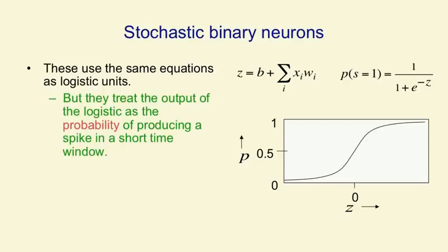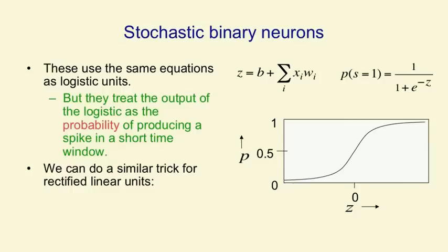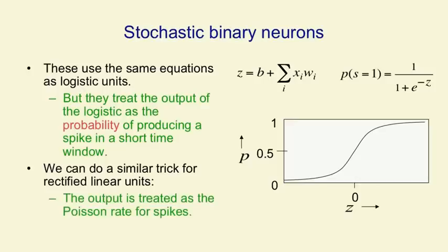Of course, if the input is very big and positive, they will almost always produce a 1, and if the input's big and negative, they'll almost always produce a 0. We can do a similar trick with rectified linear units. We can say that the output, this real value that comes out of a rectified linear unit, if its input is above 0, is the rate of producing spikes. So that's deterministic. But once we've figured out this rate of producing spikes, the actual times at which spikes are produced is a random process. It's a Poisson process. So the rectified linear unit determines the rate, but intrinsic randomness in the unit determines when the spikes are actually produced.